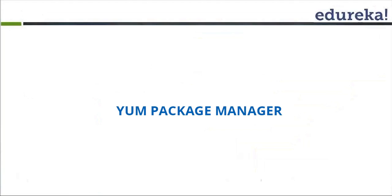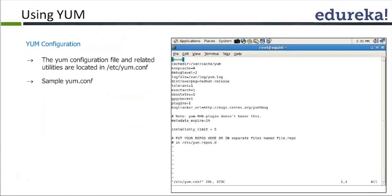The next one is YUM. Just like RPM, YUM would also have YUM install, YUM remove, YUM upgrade — we can perform all kinds of operations using YUM. The only difference is YUM will have a configuration file where we define where YUM should go and fetch the RPM, and we define the repository from where YUM can go and download all the RPMs.